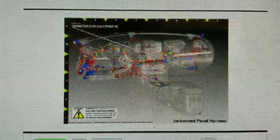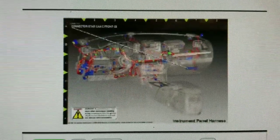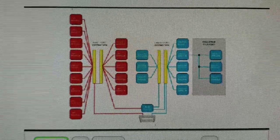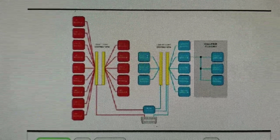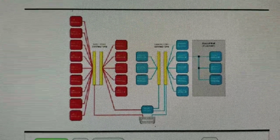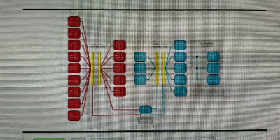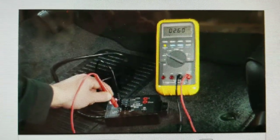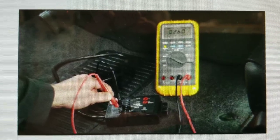Both the star connectors and DLC can be used to measure bus resistance and voltage. Refer to the wiring application for star connector locations. One method of determining a partial or complete bus failure is to first check bus plus and bus minus voltage for an indication of the possible cause. The most convenient place to do this is at the DLC using a breakout box. Refer to the wiring application for the DLC pinout information.